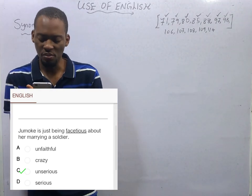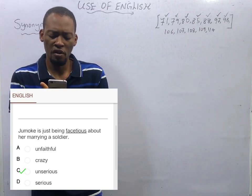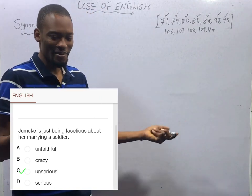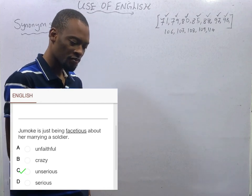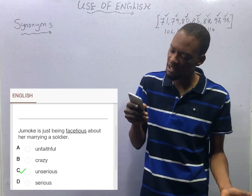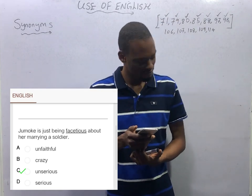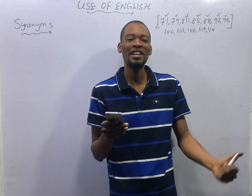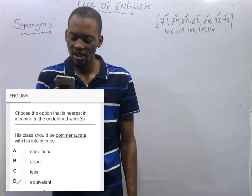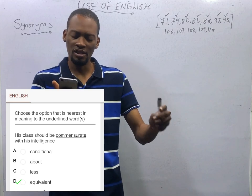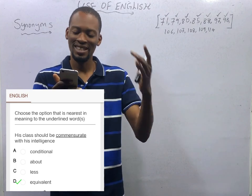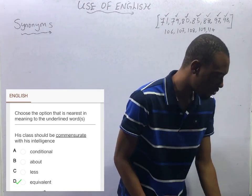To be facetious means to be funny when you should be serious — when you should be focused, you are playing. 'Jumoke is just being facetious about marrying a soldier. She is just being funny.' Next: 'His class should be commensurate with his intelligence.' It means equivalent to the intelligence, or proportional to the intelligence. That makes option D the correct option.